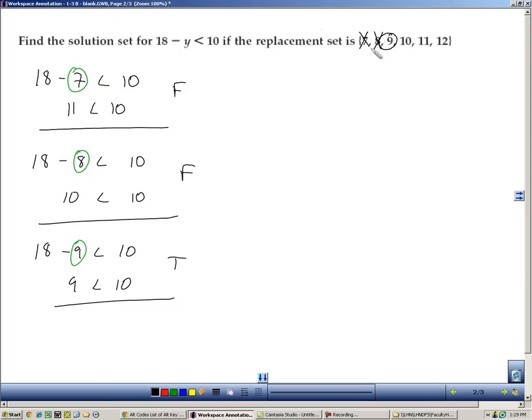Now I want you to notice these numbers, they get bigger. And if I continually plug in a value that gets bigger and I take it away from 18, I'm going to keep getting numbers that are less than 10. Let me show you one more just to prove my point. 18 minus 10 is 8, and that is less than 10. So 10 is also a solution.